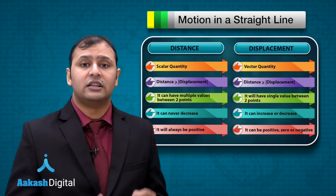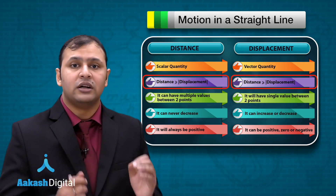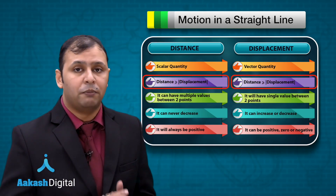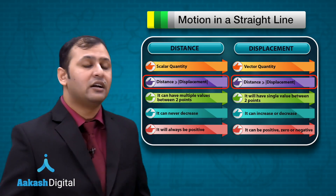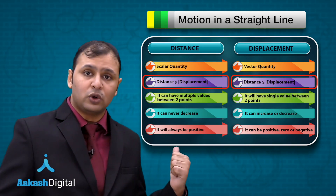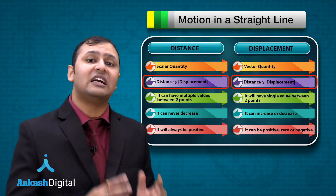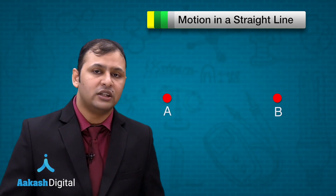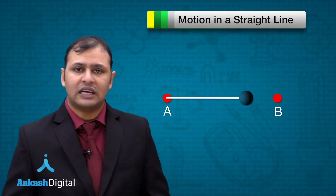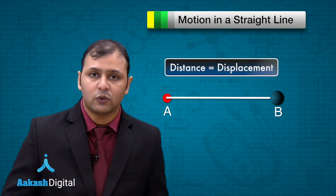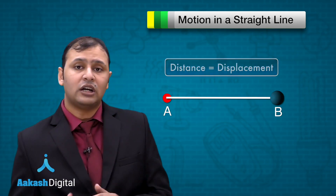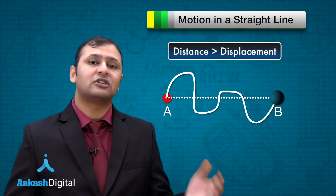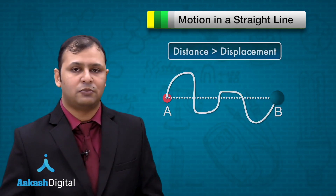Displacement's maximum value will be equal to distance, and in general you can say distance is always equal to or greater than displacement. Why so? If an object is moving between two points and it follows a straight path, distance and displacement would be equal. But if an object moves in a curvilinear path, the distance of the object is greater than the displacement.